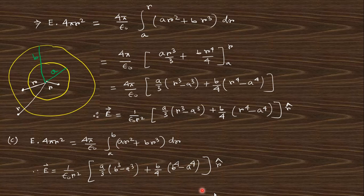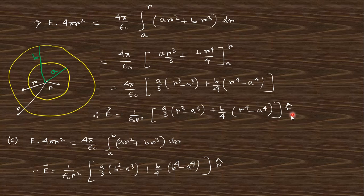For region 3 (r greater than b), the charge integral runs from a to b. Substituting this limit gives the expression for the electric field, and written in vector form it points in the r̂ direction.